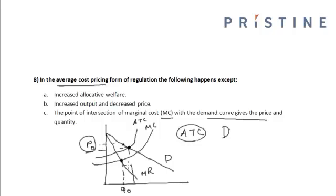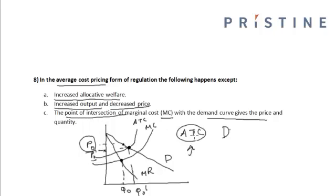At this price, we can see that the output has increased from Q0 to Q0 dash, whereas the price has decreased from P0 to P0 dash. So output has increased and price has decreased, which increases allocative welfare. The point of intersection is given by the average total cost curve with the demand curve, hence the correct option is option C.